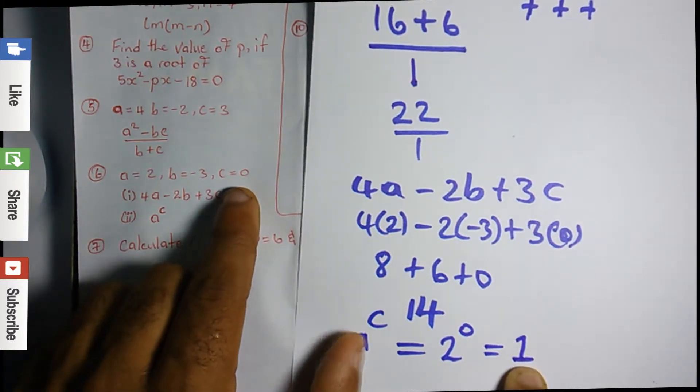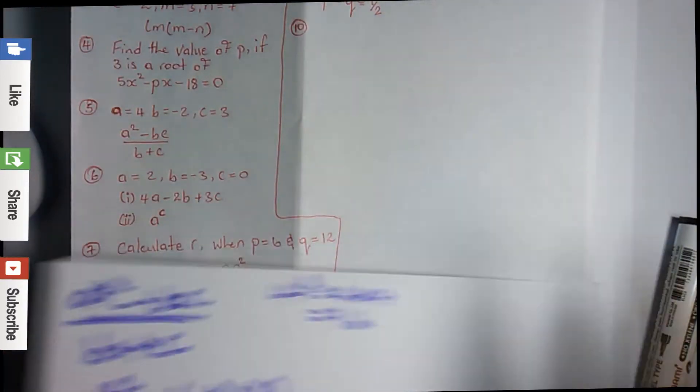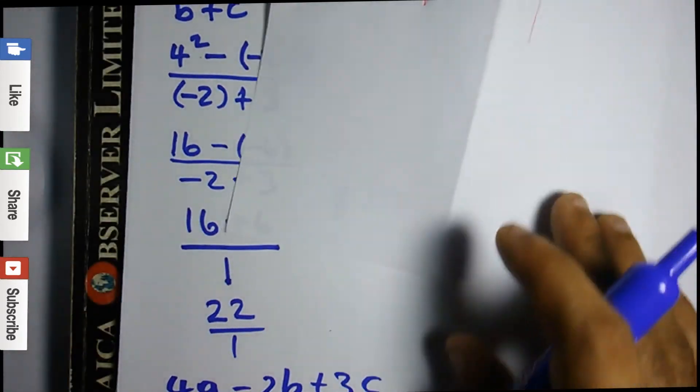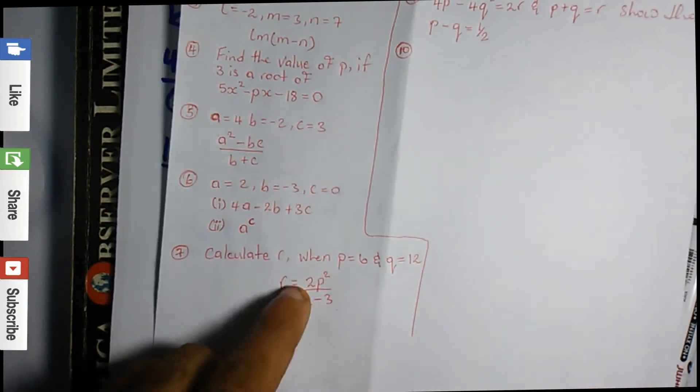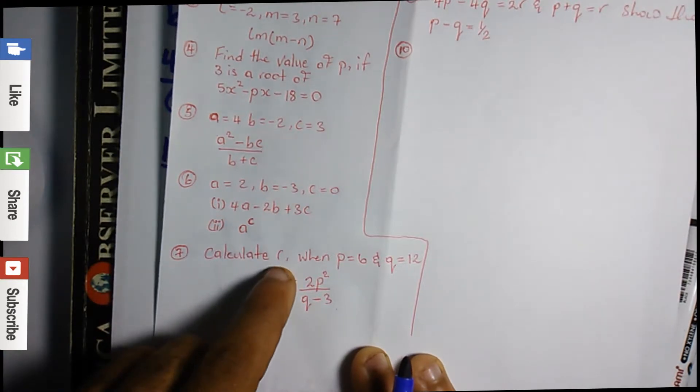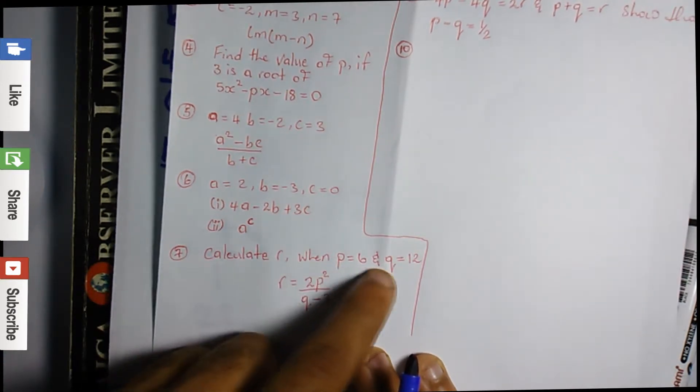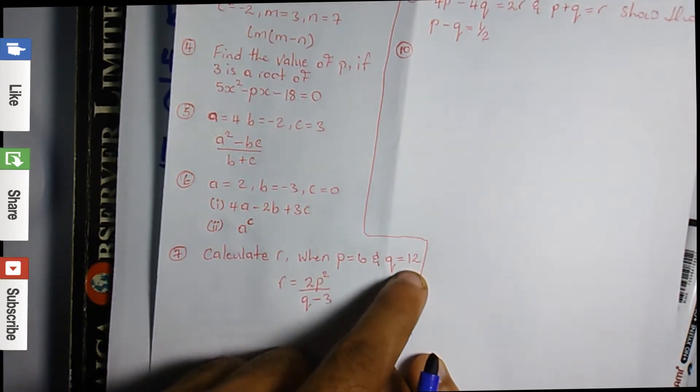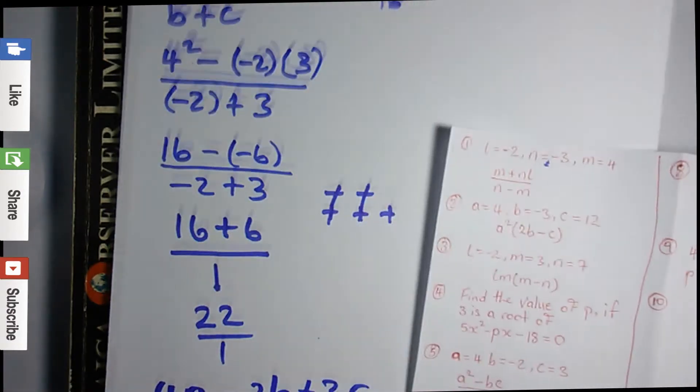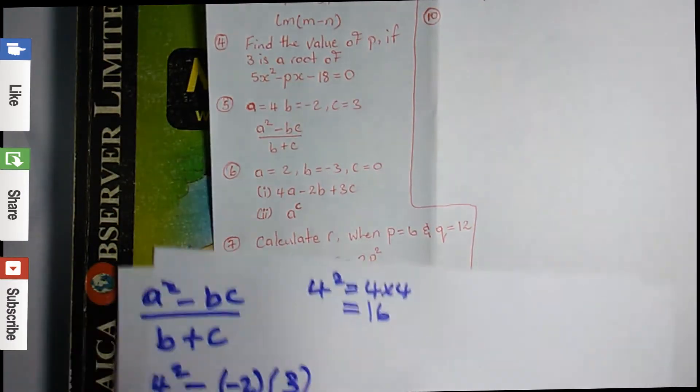So we can move on to the next question. We have calculate r when p = 6 and q = 12.